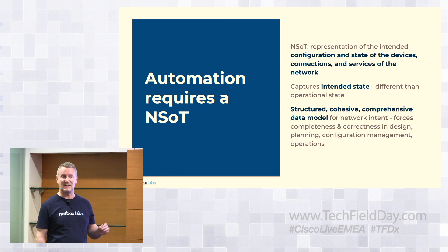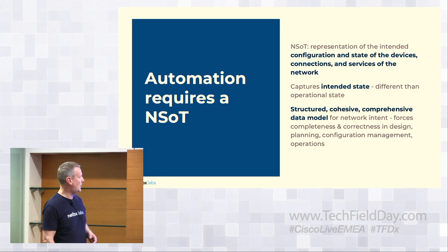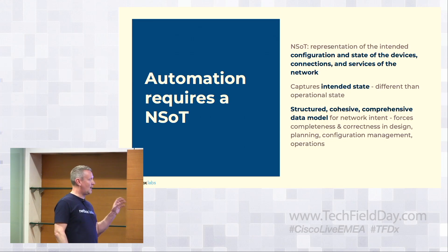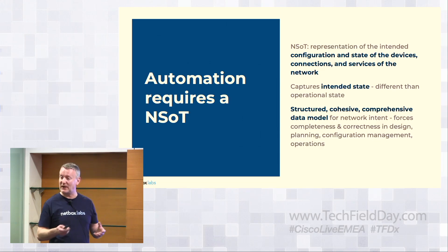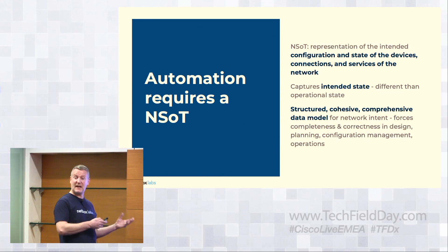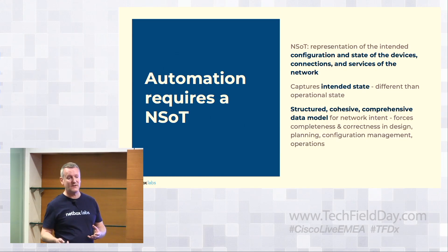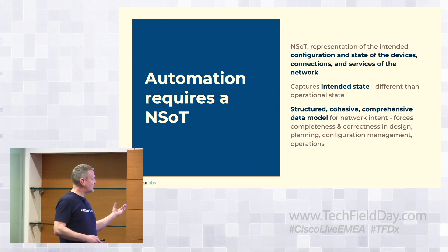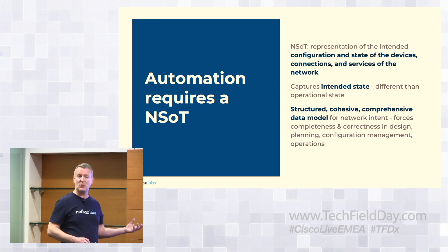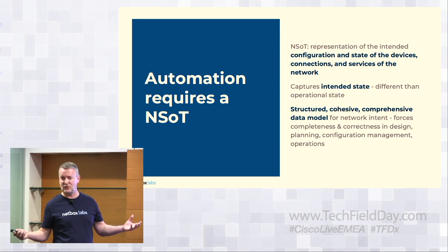The operational state is what our monitoring tools, discovery tools, and assurance tools like IP Fabric are telling us about the actual network. The source of truth is where we define the intended state — what we as network engineers and architects say the network should be. With Netbox as a source of truth, we have a structured, comprehensive, and cohesive data model. It's not spreadsheets or text files — it's a relational database that enforces the data model. Without this source of truth, you can't do network automation at scale if you've got disparate sources like spreadsheets.